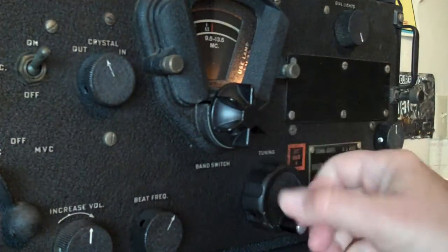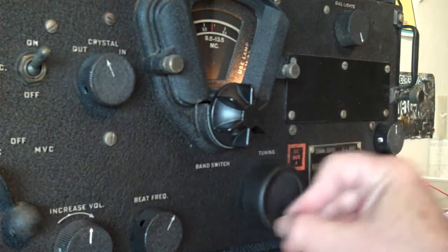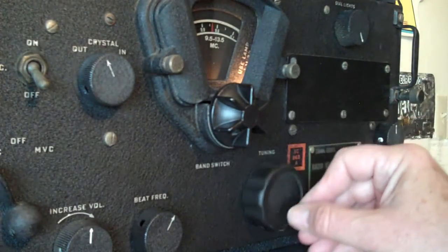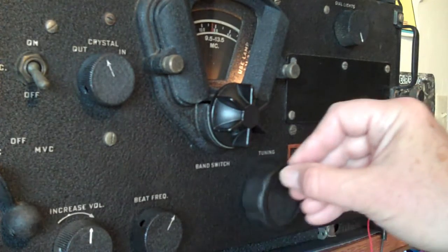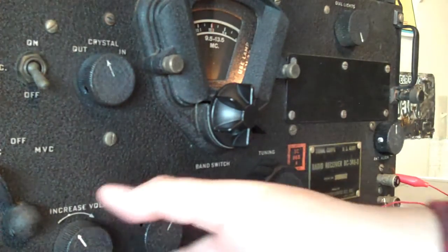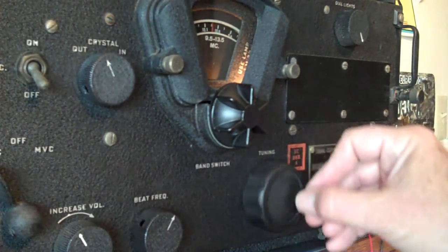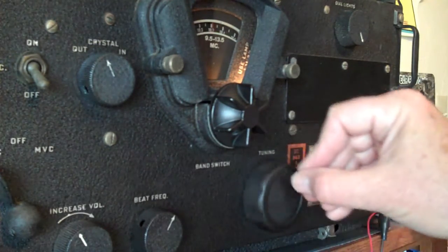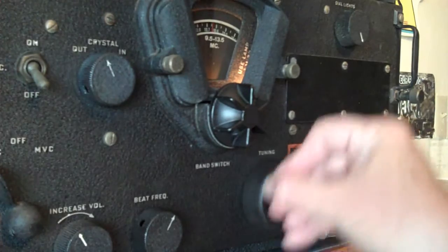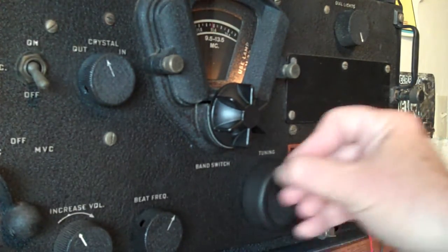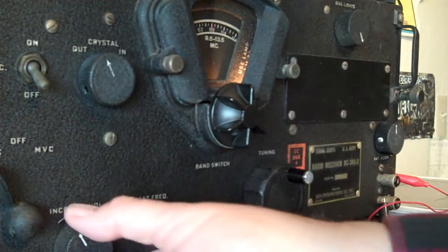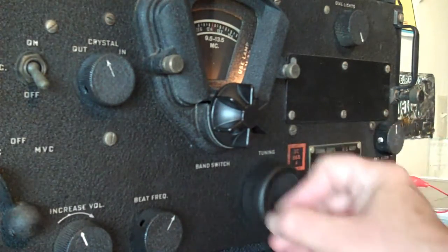And that's about all for that band. Okay, let's try the next band, 9.5 to 13.5. There's a lot of noise. I'm not getting WWV, and I tried a while ago on my ham radio. I couldn't get 10 megahertz WWV, so it's either off the air or we don't have any propagation. Broadband noise up there.